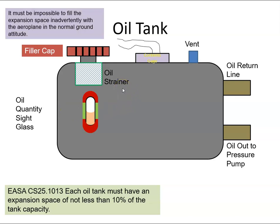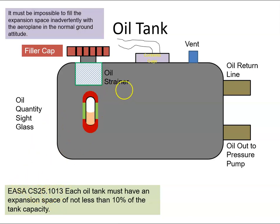The oil tank is a fundamental component of the lubricating system. It's where the oil is stored, and it's from this tank that the oil is fed to the engine and then returns back from the engine via the scavenge pumps.